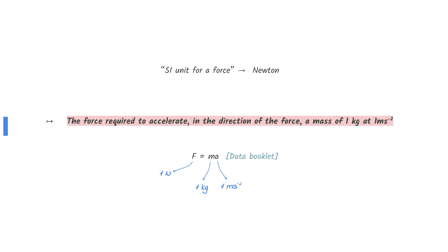The SI unit for force is the newton. 1 newton is the force that accelerates 1 kilogram of mass at 1 meter per second squared. Therefore, the answer to this question is the force required to accelerate, in the direction of the force, a mass of 1 kilogram at 1 meter per second squared.